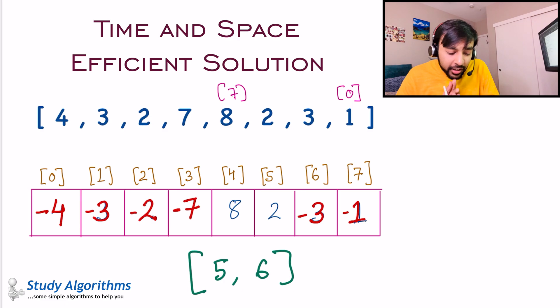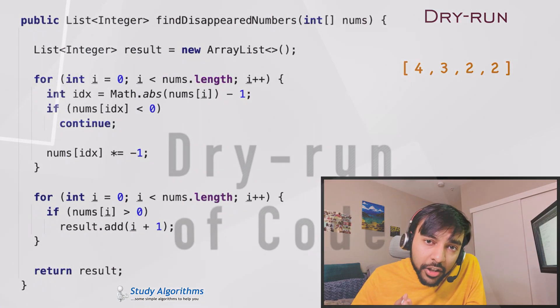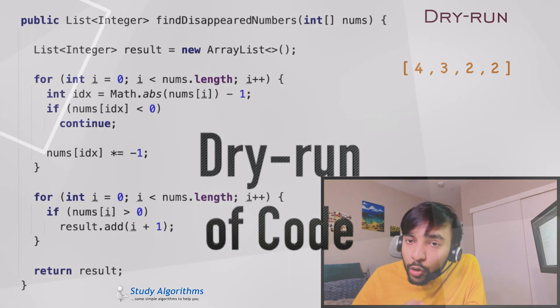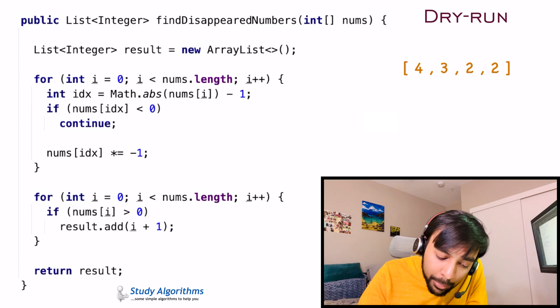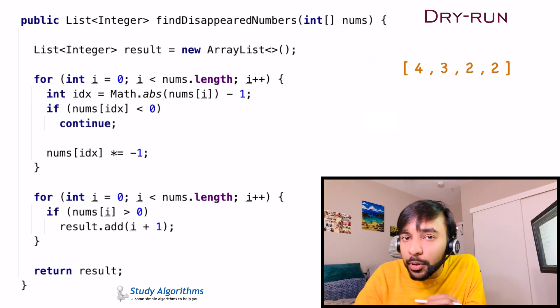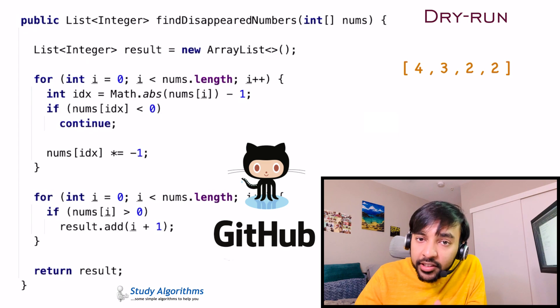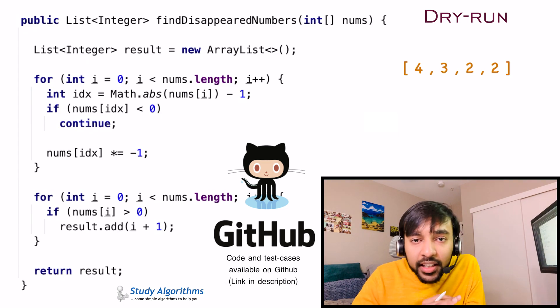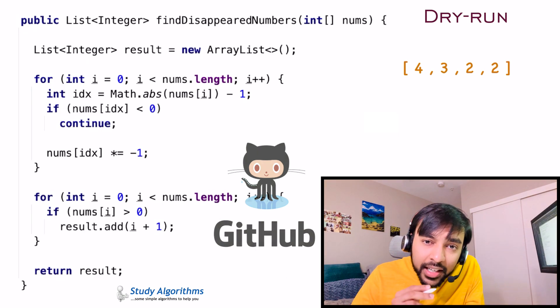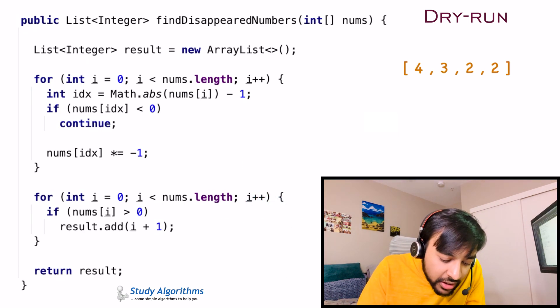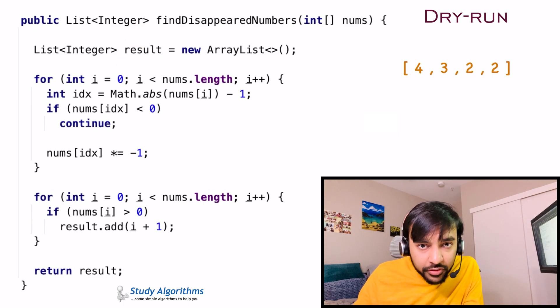On the left side of your screen, you have the actual code to implement this solution. And on the right, I have this sample array that is passed in as an input parameter to the function. Oh, and by the way, this complete code and the test cases are available on my GitHub profile as well. You can find the link in the description below. Let's start with the dry run. First of all, I have this result set that will contain my answer function and will be returned through this function.